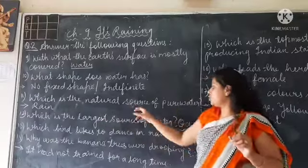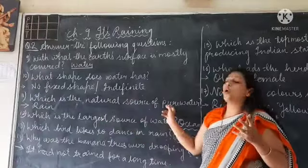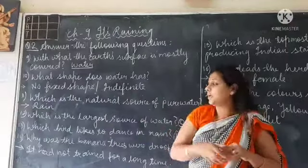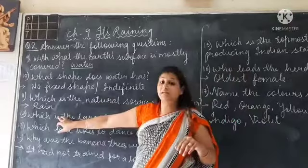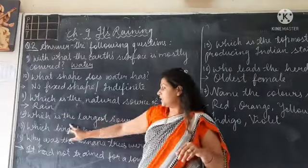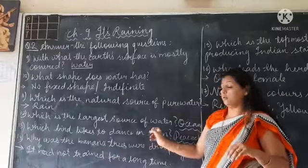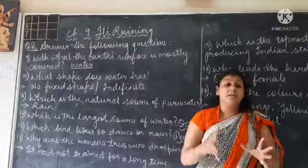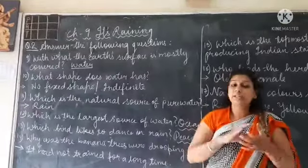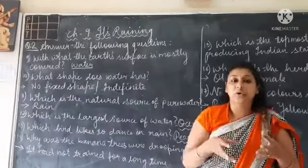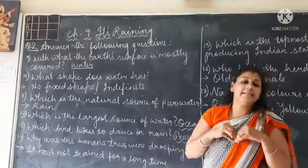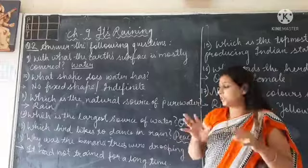Question 11: Which is the natural source of pure water? Pure water ka natural source kya hai? Rain water — it is the rain. Number 12: Which is the largest source of water? The largest source of water is the ocean. Here it is not asked about salty water or drinking water, only the largest source, so we can write ocean.